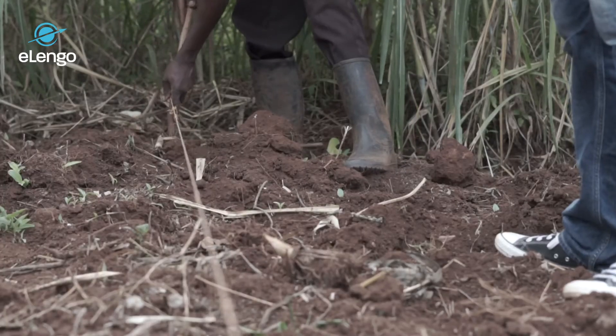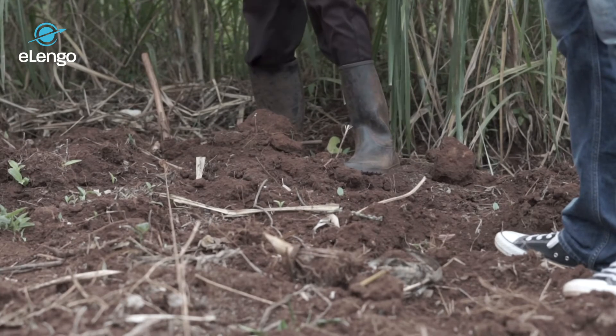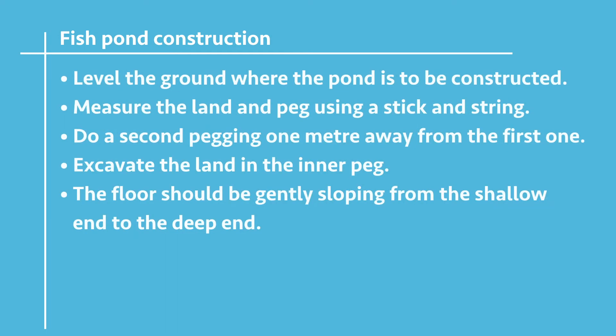After you've leveled the ground, we now peg the ground. Pegging is the act of marking the ground. For example, if you want to construct a fish pond of 20 by 20 meters, you measure the land to the actual size and use a rope and a stick to peg the four corners. This first pegging is called the inner pegging. We will also have another pegging on the outer surface called the outer pegging, which is usually measured one meter away from the inner pegging, also using a rope and a stick to mark.